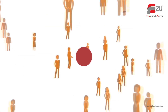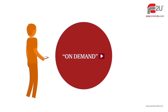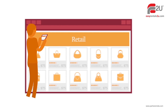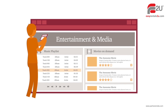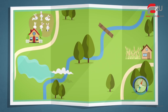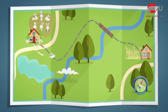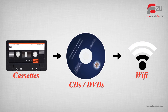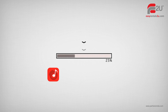The shared economy is an economic model often defined as a peer-to-peer based activity of acquiring, providing or sharing access to goods and services that are facilitated by community-based online platforms. The language used to define this model could have evolved over time, but the concept of sharing is not entirely new, as some of the earliest forms of human transactions involved bartering of goods and services without any monetary exchange. The digital evolution brought about by technology has taken this concept forward and created business opportunities.